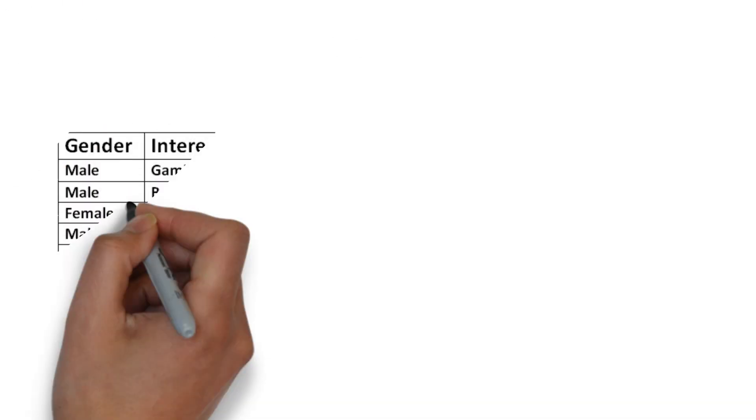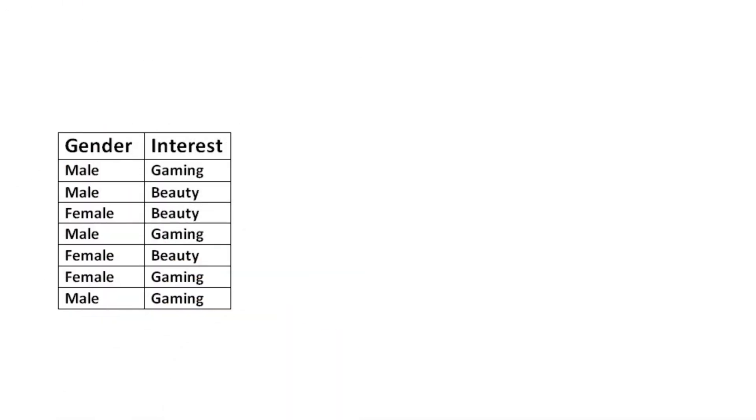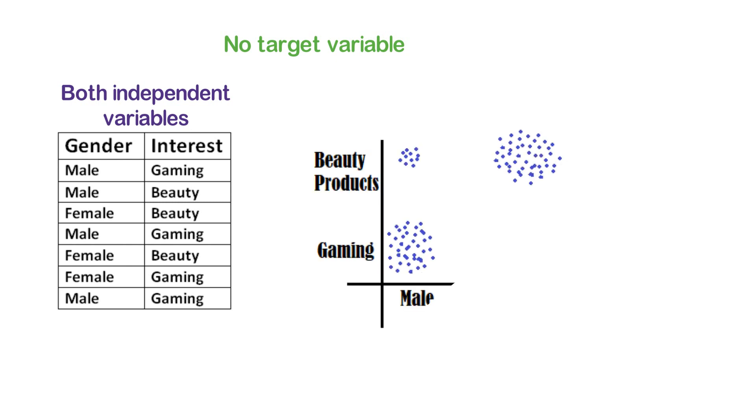Let's take a simple example to understand this. We have the data which has two independent variables: one is gender and the other is interested in beauty products or gaming products. We don't have any target variable in this case. If we visualize this data, this is how it looks.